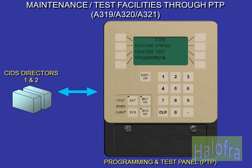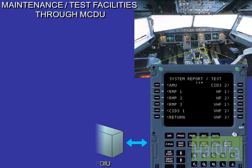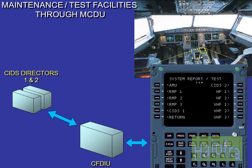The CIDS byte is accessible from the PTP and also from the MCDU through the CFDIU. On the A318, the CIDS director byte is only accessible from the MCDU through the CFDIU.